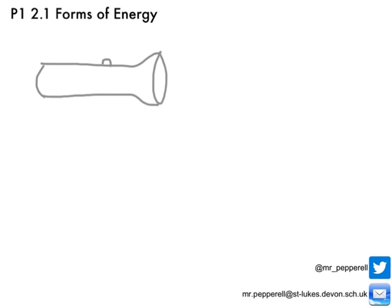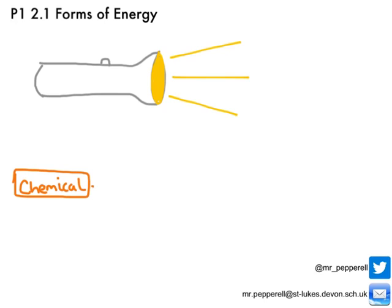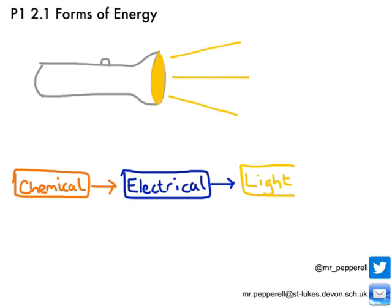We've got lots of forms of energy, and here's the important part: energy can be transferred from one form to another. Let's think about a battery-powered torch. When it's turned off, we've got chemical energy stored up in the battery. When we turn the torch on, that energy is transferred through the wires as electrical energy, and when it reaches the bulb it is transferred to light and also to heat, because the bulb gets hot. I can describe these changes using an energy transfer diagram: chemical energy in the battery → electrical energy in the wires → light and heat at the bulb.